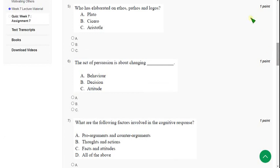Question five. Who has elaborated on Ethos, Pathos and Logos? So we know that it is Aristotle. It is Aristotle theory. So mark option C, Aristotle's theory.